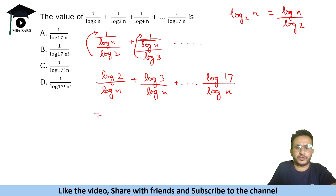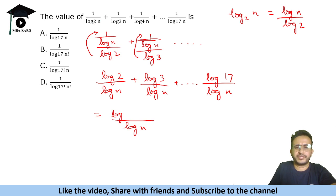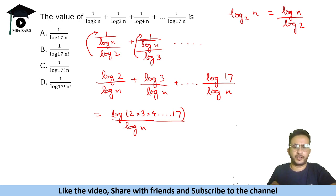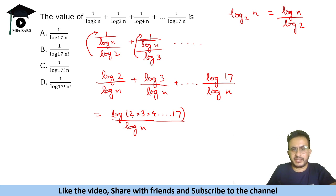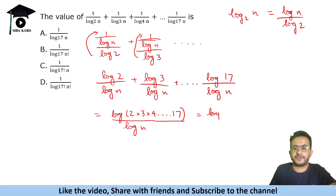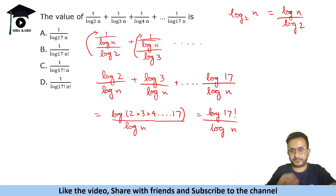Taking log n as the common denominator, the numerator becomes log 2 plus log 3 plus ... plus log 17, which equals log(2×3×4×...×17) = log(17!). We can include 1 in the product without changing anything. So this becomes log(17!) divided by log n, which is of the format: numerator goes to the argument and denominator goes to the base.